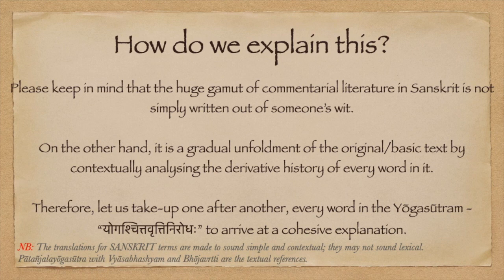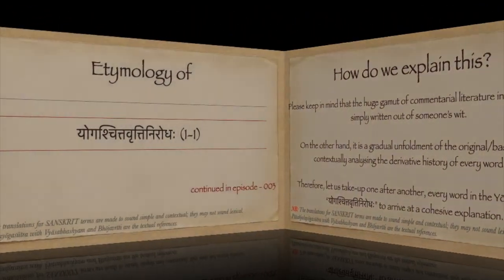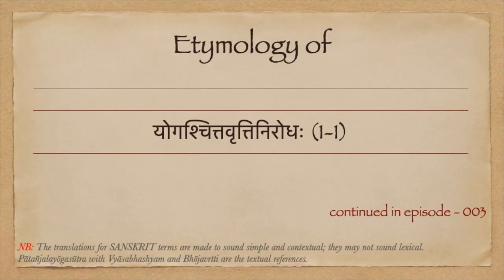On the other hand, it is a gradual unfoldment of the original basic text by contextually analyzing the derivative history of every word in it. Therefore, let us take up, one after another, every word in the Yoga Sutra — Yogas Chitta Vritti Nirodha — to arrive at a cohesive explanation. The etymological explanation of the Sutra, Yogas Chitta Vritti Nirodha, will be provided in the coming episode.